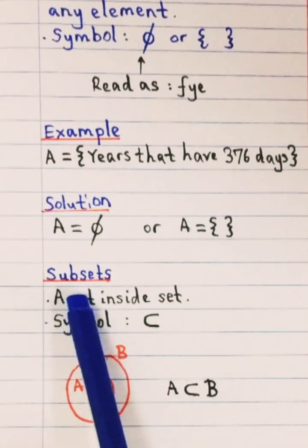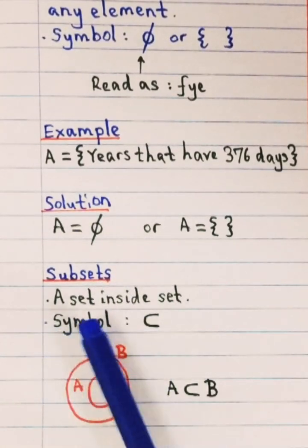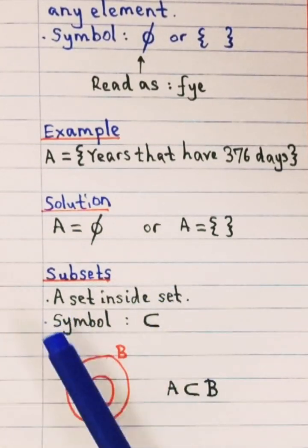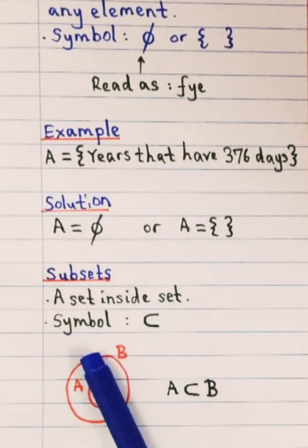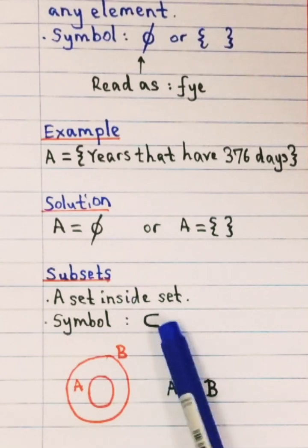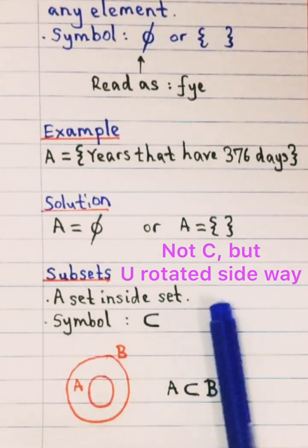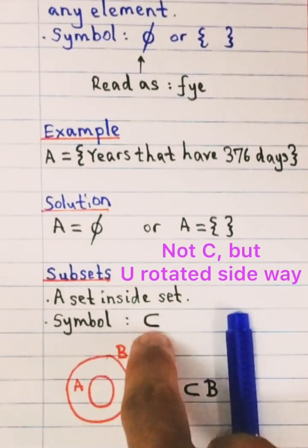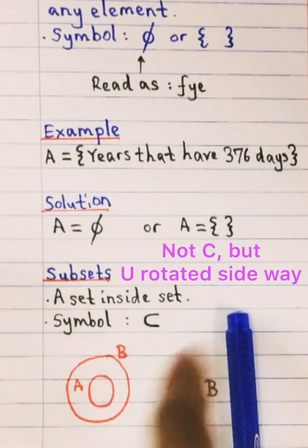Okay, now this is a new subtopic which is what we call subsets. So by definition, a subset is a set inside a set. So a set inside another set is called subset. So the symbol that we use to represent subset is like an inverted U. If you have your U like this, so if you shift your U 90 degrees, you'll have something like this. Not C but it's like U, like 90 degree U.